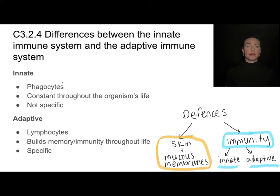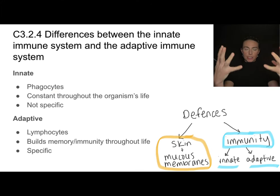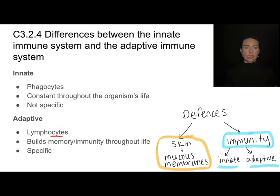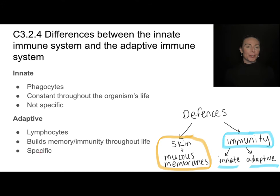Innate immune systems involve cells called phagocytes. 'Phago' refers to phagocytosis — this engulfing process — and 'cyte' means cell. The innate system remains constant throughout an organism's life and is not specific; these cells attack anything that doesn't belong there rather than specific pathogens. The adaptive immune system involves cells called lymphocytes — cells living in your lymph nodes — and these build immunity and memory throughout an organism's life, becoming more intricate as an organism gets older. They are specific to different pathogens.